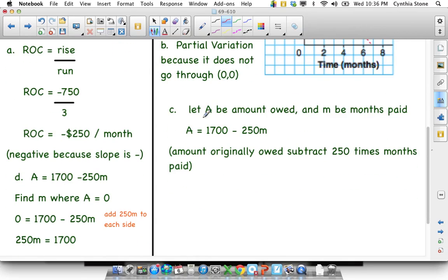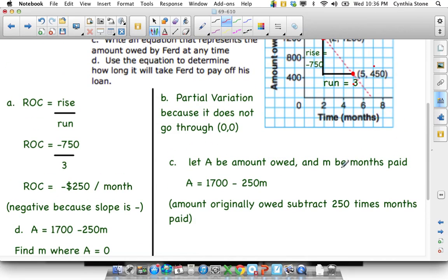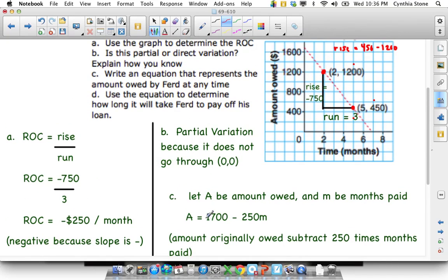So we're writing the equation out right here. You'll do a let statement, just to make sure the variables are clear. So A is the amount owing at any point. So at the very beginning, it'd be the full 1700, and at the very end, it'd be zero. But A is how much Ferd owns at any given point in time, and M is how many months he's been paying for. So what you think of when you do any of these graphs with partial variation, it's going to be the fixed amount or the starting amount, which is 1700. It's usually plus the slope times, or plus the rate of change times whatever's on the x-axis.